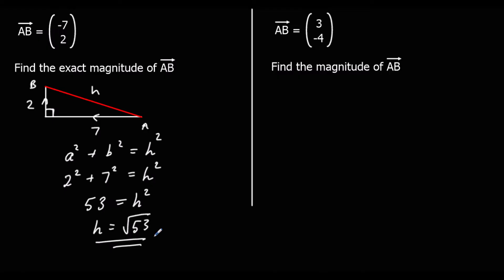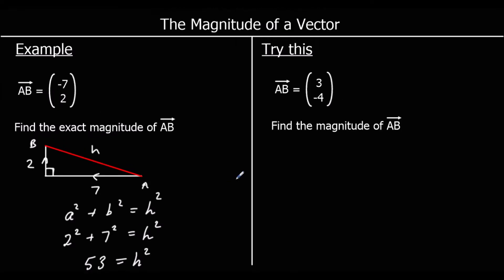To get h by itself we square root both sides, so h is the square root of 53 — which is just root 53. That's our answer: root 53 is the exact magnitude of A to B. Here's a question for you to try, so pause the video and give this a go. We're told A to B this time is three, negative four, so to get from A to B we go right three, down four.